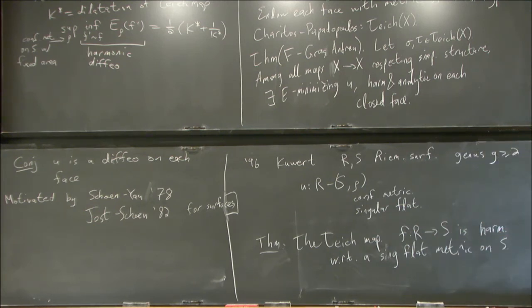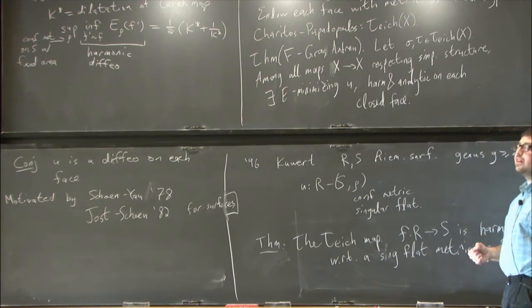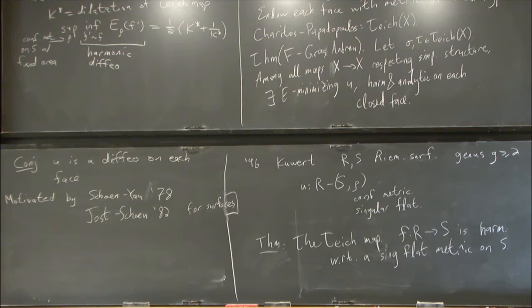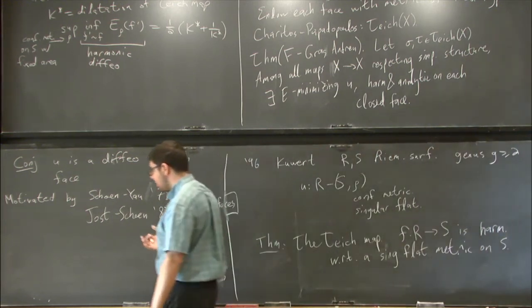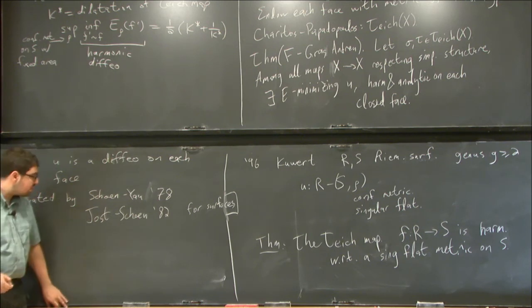The analysis is not much easier on non-singular edges, so it's, it's, um. But you impose that each phase goes to each phase. Yes, yes. So the analysis of classical harmonic maps sort of breaks down on this edge, even though locally it's still manifold. So it's a little bit tricky, but that's one of the details to be worked out. Yeah. So Yoast-Shane and Shane-Yao proved this result for surfaces.